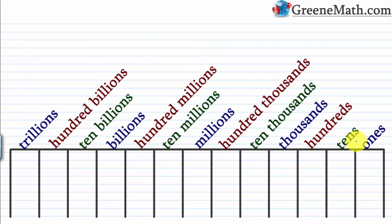Now let's look at a place value chart — an easy way to learn and memorize your place values. The chart shows the place value for each digit in a number. Numbers continue forever, so there's no largest place. Here I have from the ones place out to the trillions place. The rightmost digit of a number is always in the ones place. Moving left, you have tens, hundreds, thousands, ten-thousands, hundred-thousands, millions, ten-millions, hundred-millions, billions, ten-billions, hundred-billions, and trillions.